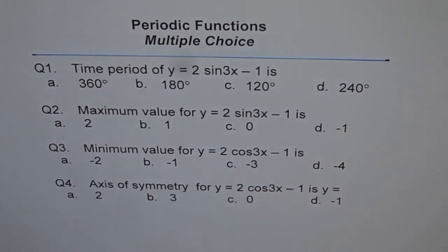Question 3. Minimum value for y = 2 cos 3x − 1 is: a) −2, b) −1, c) −3, or d) −4.